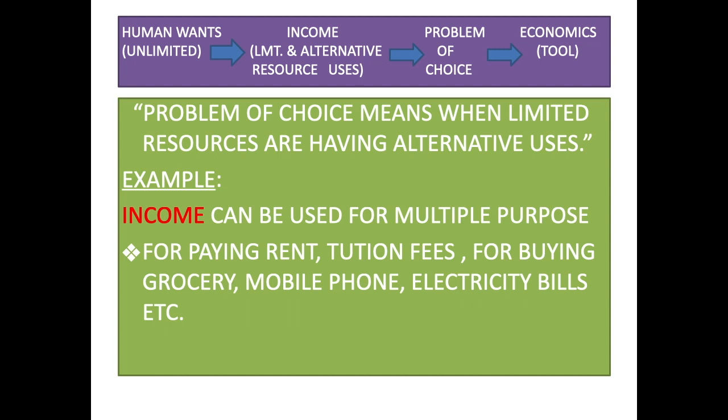Problem of choice means when limited resources have alternative uses. For example, income can be used for multiple purposes: paying rent, paying tuition fees, buying groceries, buying mobile phones, paying electricity bills, and many other purposes. We know income is a limited resource. For example, if we have a monthly income of rupees 10,000, the problem is how we want to utilize that 10,000 among its different available alternatives — paying rent, tuition fees, buying groceries, mobile phone, electricity bill payment.